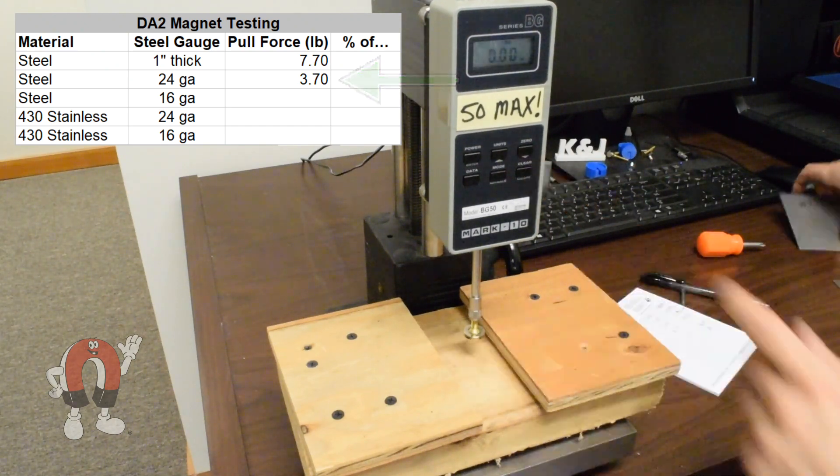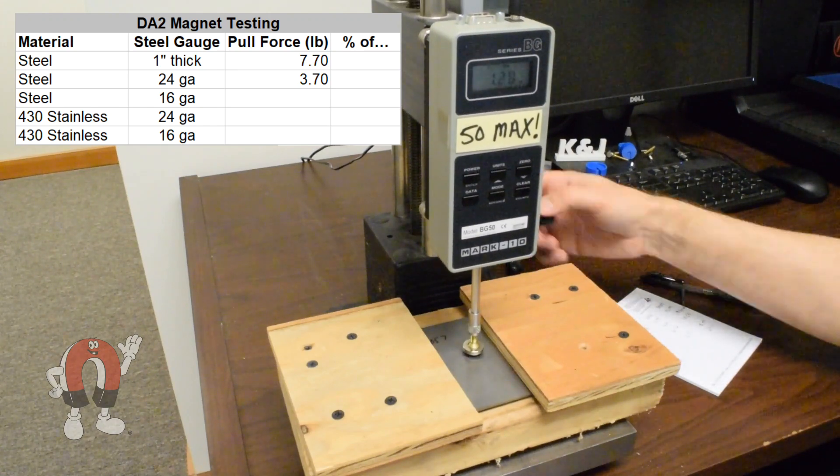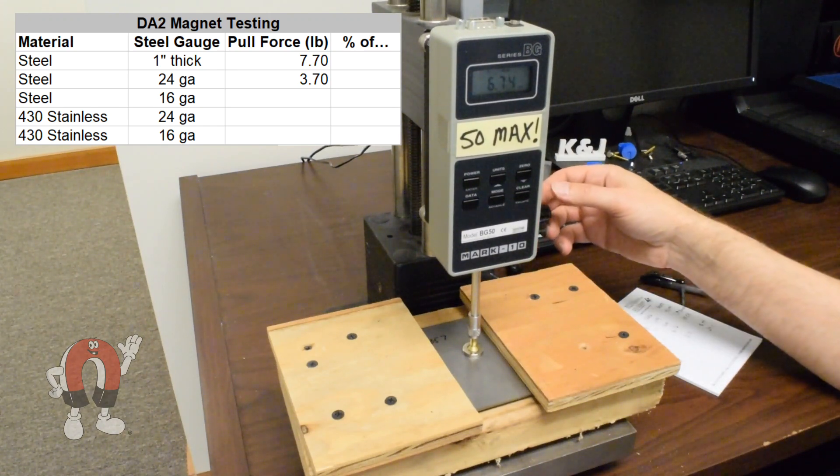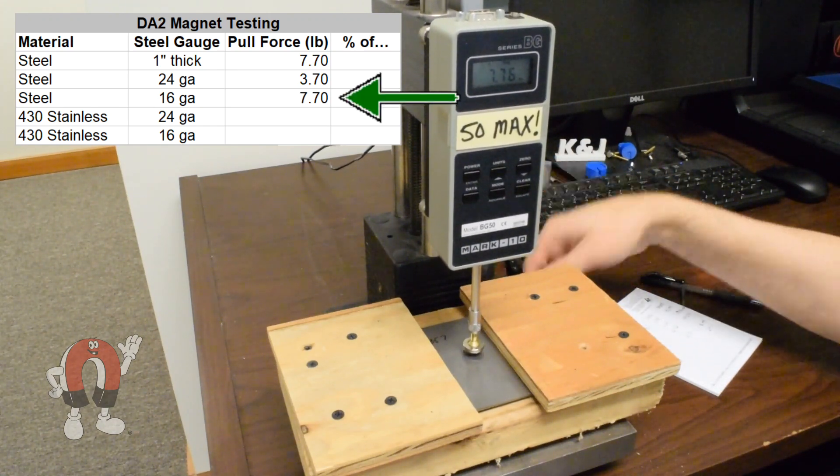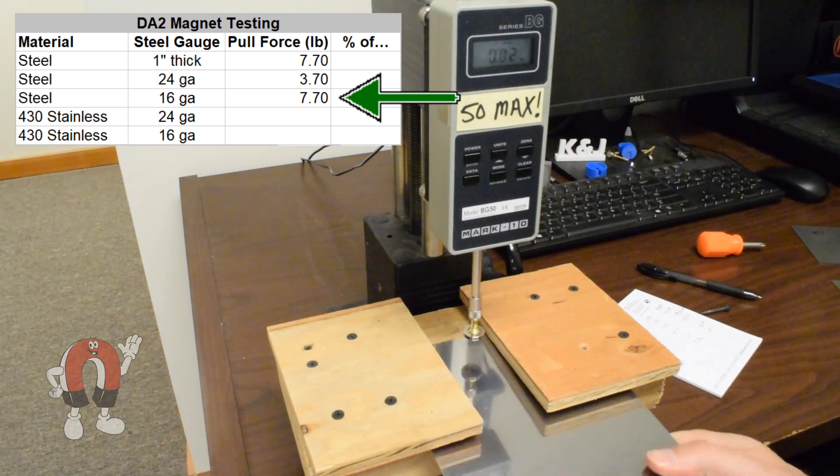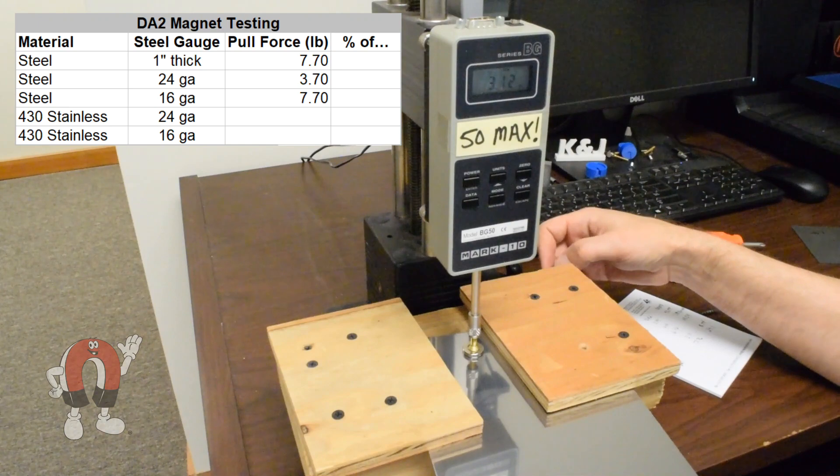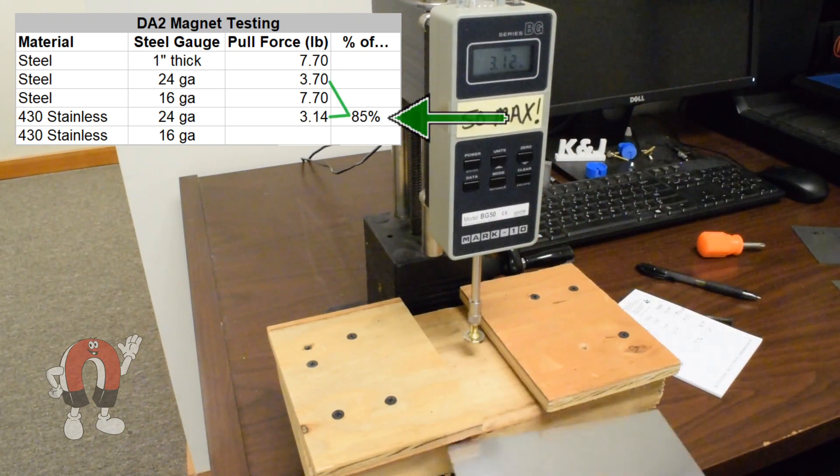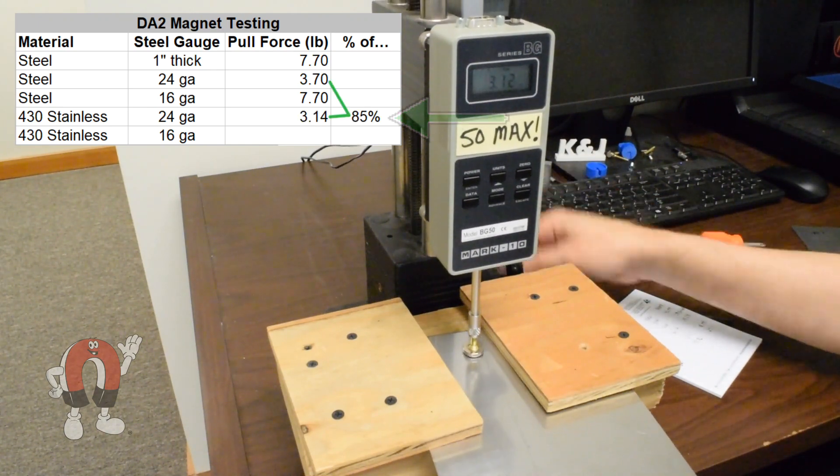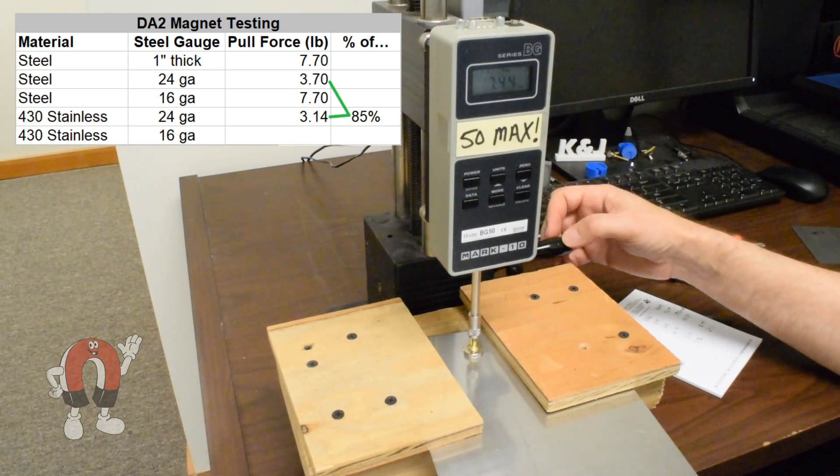To a piece of thicker 16 gauge regular steel, we see 7.7, the full strength. Now on to the thinner 430 stainless steel, and we measured just over 3 pounds for the thin steel. The thicker stainless tested to 7.4, almost the same as the regular steel.